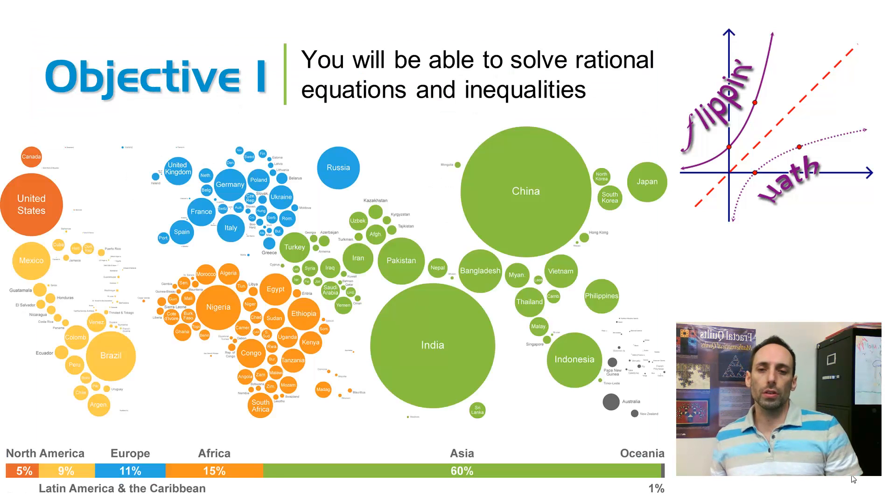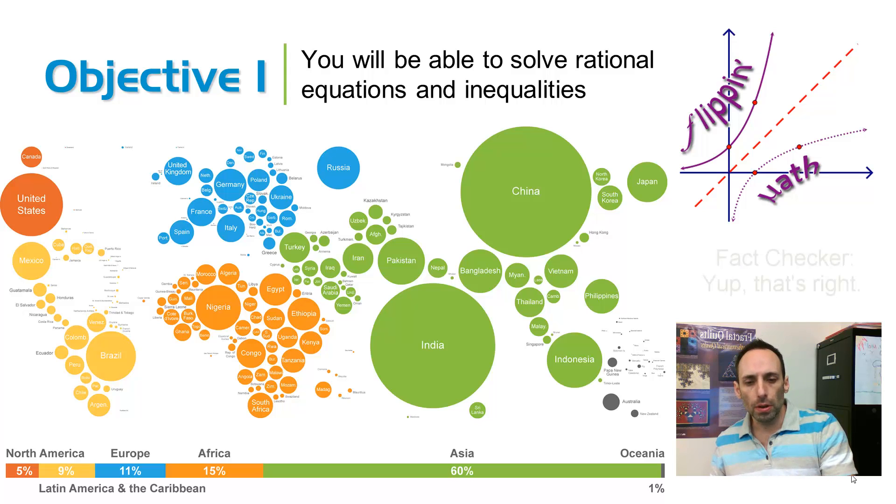So the picture here that I chose to illustrate the objective, solving rational inequalities and equations, it's a picture of the world, but it's drawn so that each one of the circles represents a country, and its size is proportional to the actual population. So even though maybe the United States and India, maybe the United States in terms of area might be bigger than India, but you can see in terms of population, it's way, way bigger.